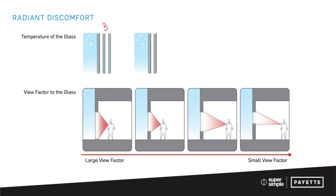For radiant comfort, there are two factors. One is the U-value of your glass — how much heat are you losing through it? If you have a really good triple-pane piece of glass, it's going to have a much warmer interior surface temperature, and you'll lose less heat to it because there's a lower delta T.